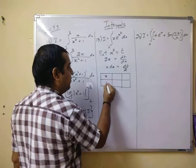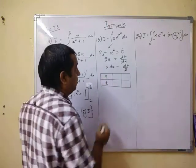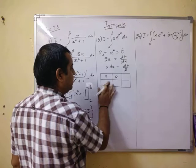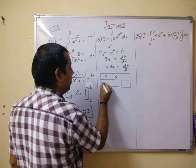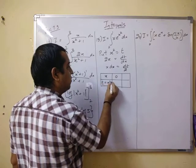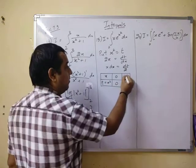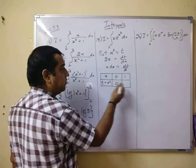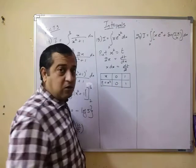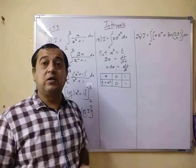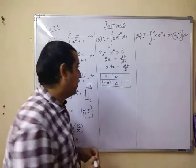What you have to do? You have changed the variable, so you have to change the limits also. Lower limit of x is 0 and what you have taken? You have taken t as x square. If you put 0 here you will get t is equal to 0 and upper limit is 1. If you put 1 here, 1 square is 1. You get this. No doubt here you are getting the values of the limits of t also as 0 and 1 only.